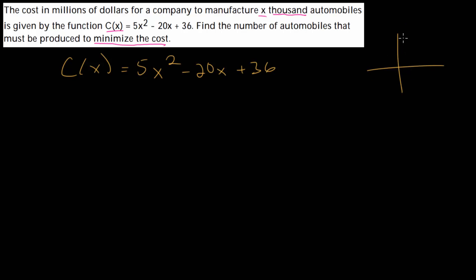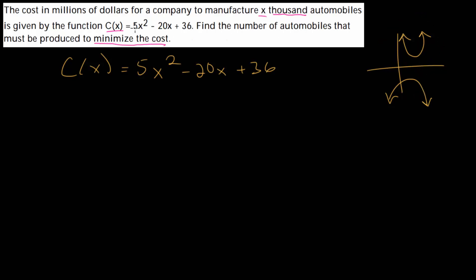They will look either like a u-shape, or they could be downward facing. We're dealing with the case where we need to find the minimum value, which means we're looking at the upward-facing case. We know it's this case because the coefficient on x squared is a positive number. If this was negative, then we would be dealing with the downward-facing case.